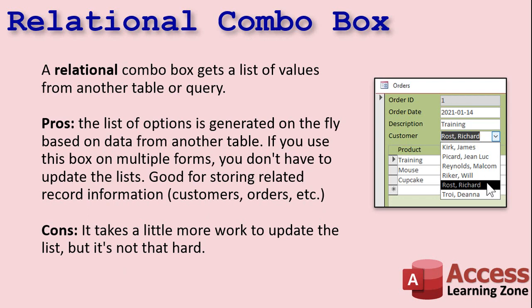A relational combo box is the one you see most of the time in a database. It gets its list of values from another table or query. The list of options is generated on the fly based on the data from another table. If you use this box on multiple forms you don't have to keep updating the list — this is good for storing related record information. For example, you might be picking a customer for your order form, and you might have that customer list in multiple different places: the order form, the shipping form, everywhere you want to pick a customer. You don't want to have to update that list in multiple places.